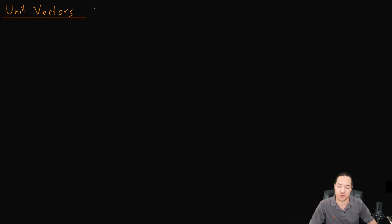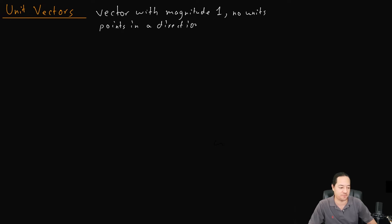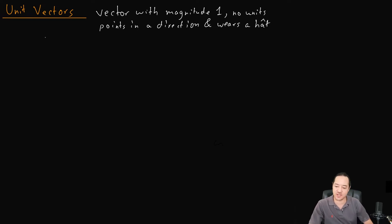Unit vectors are going to be how we create vectors and take those components and make them into vectors. Here's the idea: a unit vector is a vector with magnitude one. It has a length of one and it has no units. So what that means is it's basically just a pointer — it points in a direction, and it also wears a hat.